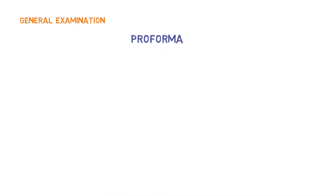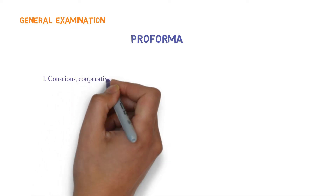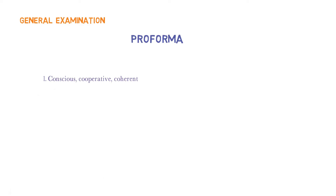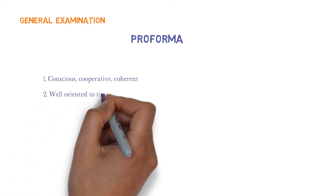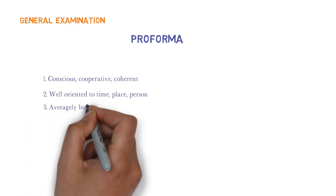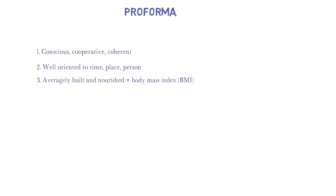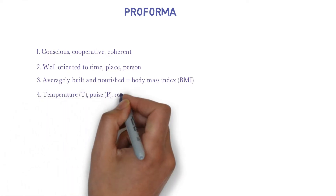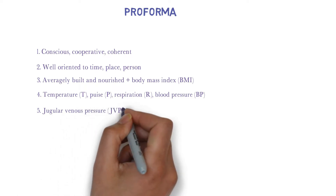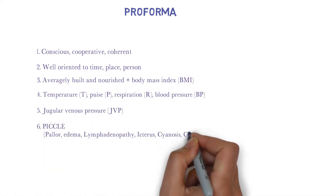First, we will check whether the patient is conscious, cooperative, and coherent. Then we will check whether the patient is oriented to time, place, and person. We will check the nourishment of the patient, and sometimes we have to check for BMI. Then we will take temperature, pulse, check for respiration, and blood pressure. Then we will check for jugular venous pressure.